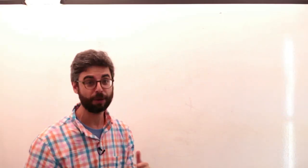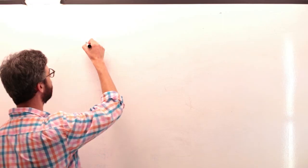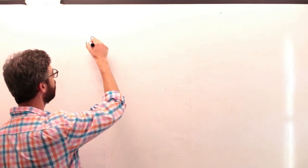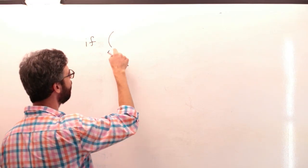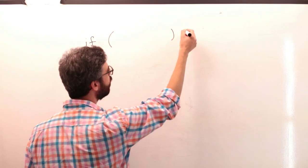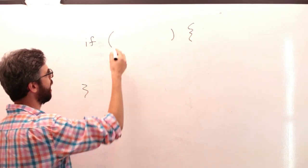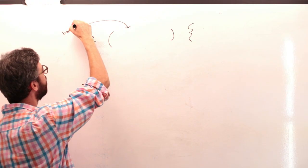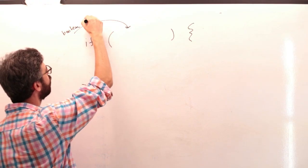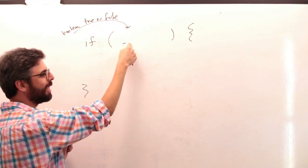If you just watched the previous video, we are looking at conditional statements. A conditional statement — an if statement — has this format: if, open parentheses, close parentheses, open curly bracket, close curly bracket, and some sort of Boolean expression — true or false — goes in there.